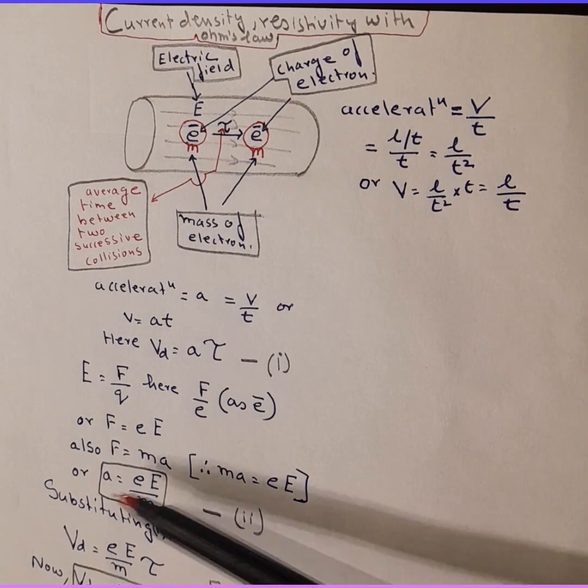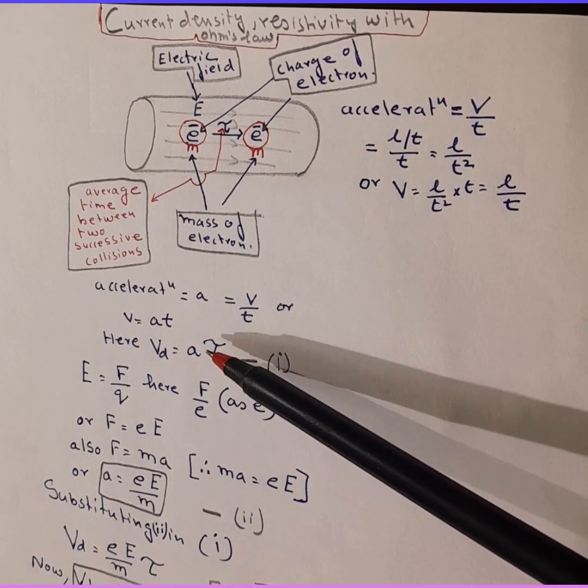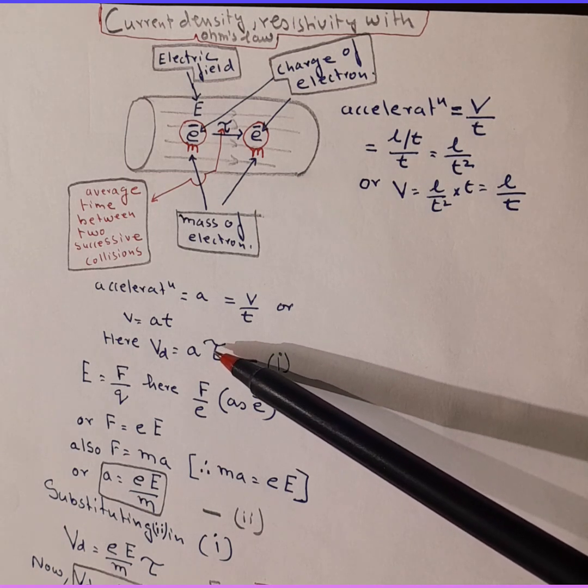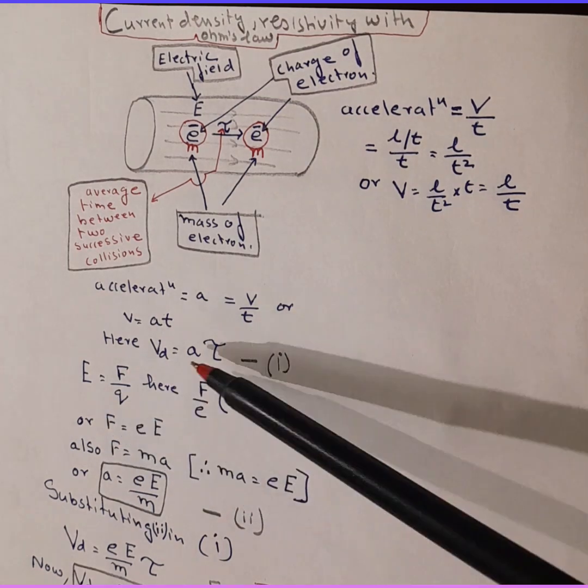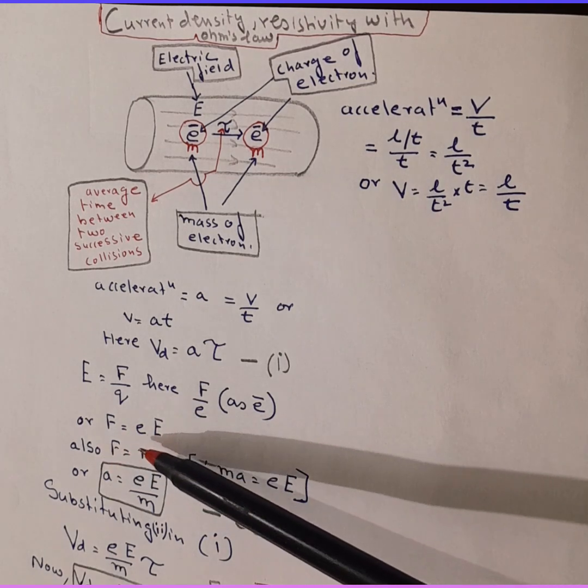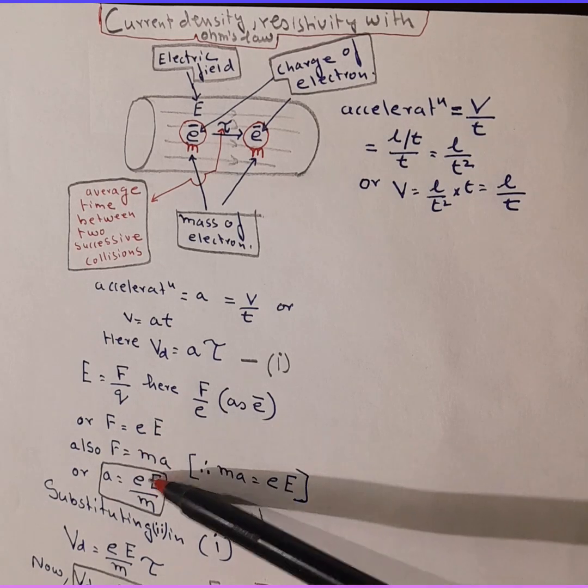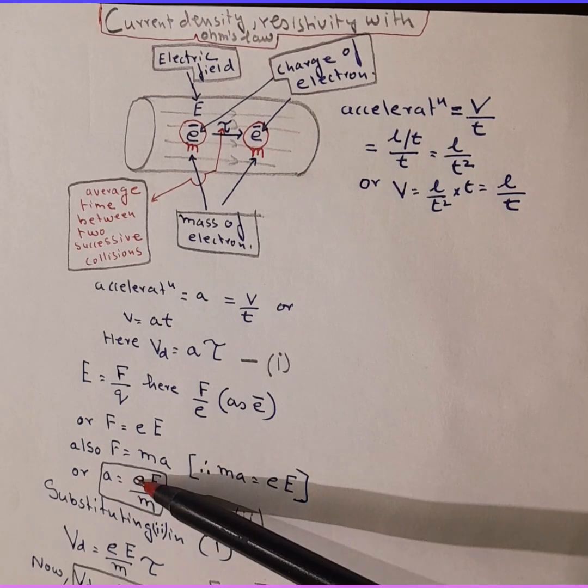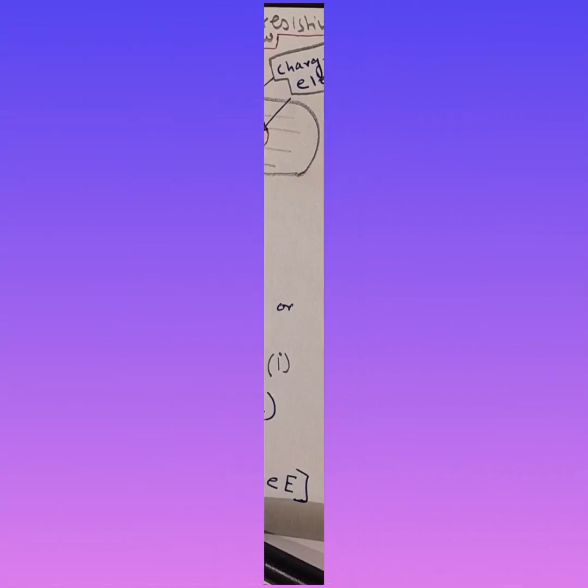What all did we derive? We derived drift velocity, which was acceleration into tau, where tau was the average time between two successive collisions. And then we also know F is equal to eE, and F is equal to MA. From that we derived, from these two formulas, we derived A is equal to eE over M. This is charge of electron, this is electric field intensity, and this is mass of electron.